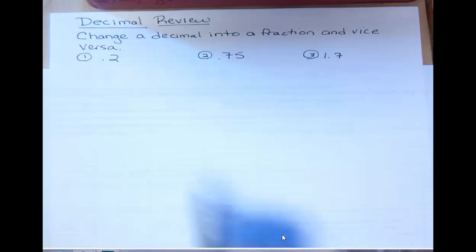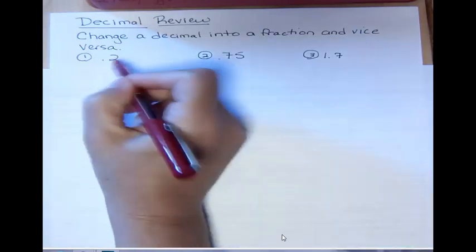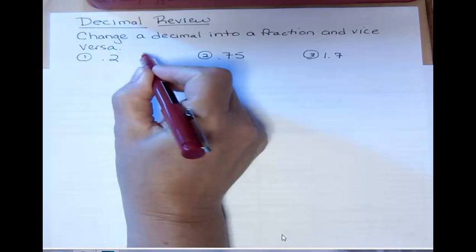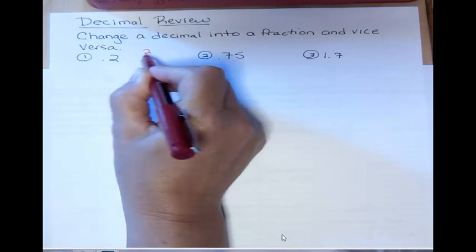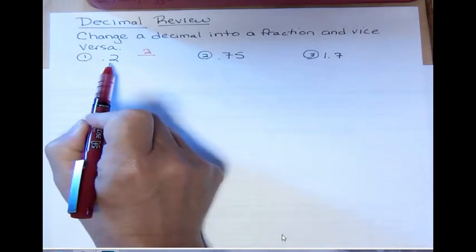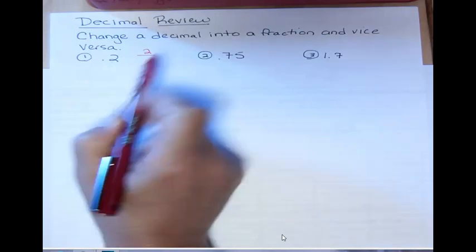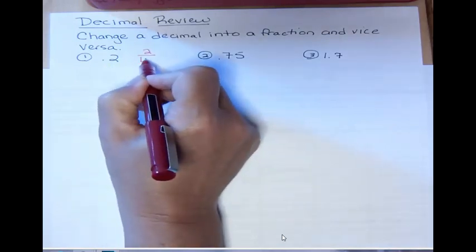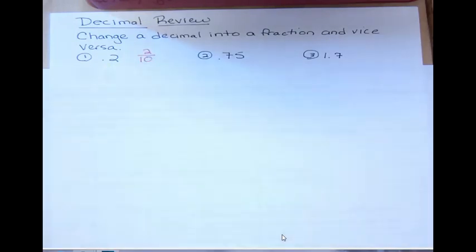If you have a decimal and you want to change it into a fraction, you're interested in how many decimal places there are. So in the first example, I have 0.2 or 2 tenths, and so there's one decimal place. So I'm going to put the number 2 on the top and then the number of decimal places corresponds directly to the number of zeros in my power of 10 number, either 10, 100, 1000, or so forth.